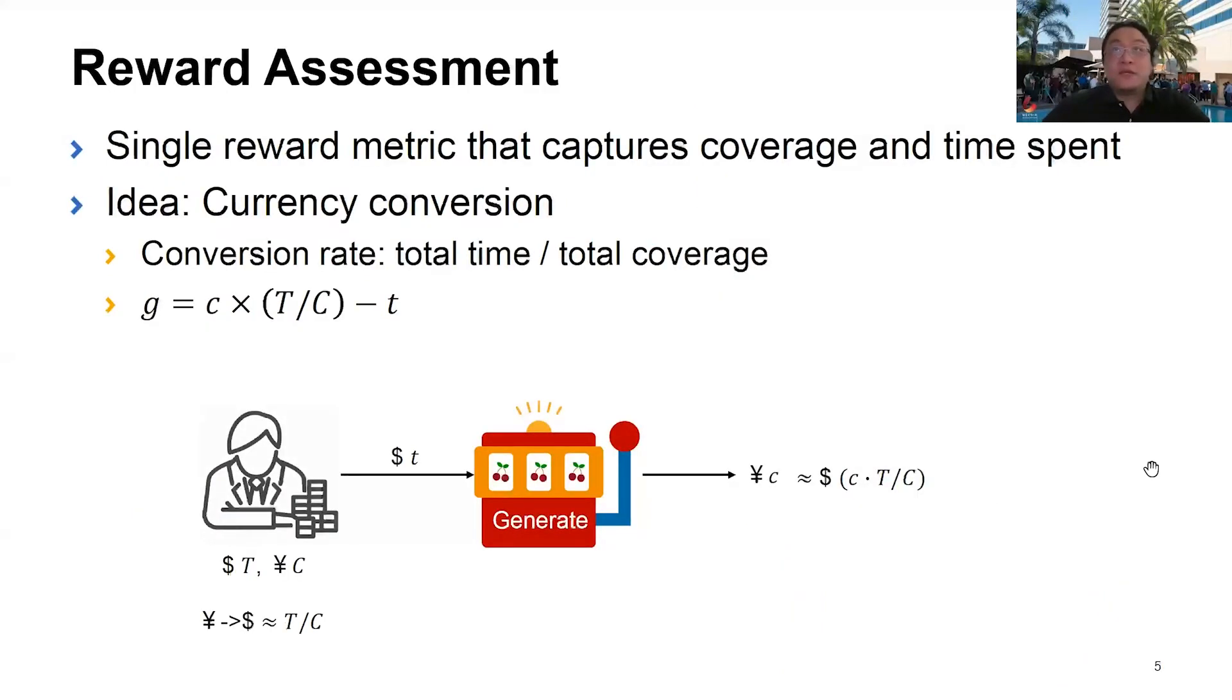We need a single reward metric that captures coverage and time spent. Let's go back to the gambler slot machine analogy. When our gambling Syzkaller picks a slot machine to play, it needs to pay a time cost and the slot machine yields a coverage reward. Time and coverage are in different currency, so we need to establish a conversion rate. This can be done by looking at the total time elapsed and the total coverage achieved. Therefore, the actual reward can be measured as the new coverage achieved converted to unit time minus the time cost.